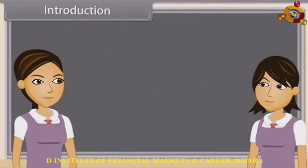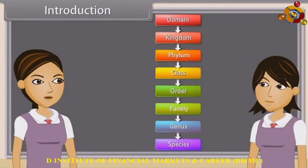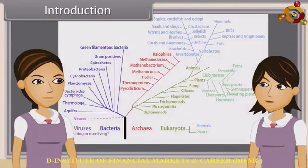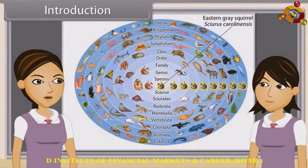Do you know what is biological classification? Biological classification, or scientific classification in biology, is a method by which biologists group and categorize organisms by biological type, such as genus or species. Modern biological classification has its roots in the work of Carolus Linnaeus, who grouped species according to shared physical characteristics. These groupings have since been revised to improve consistency with the Darwinian principle of common descent.